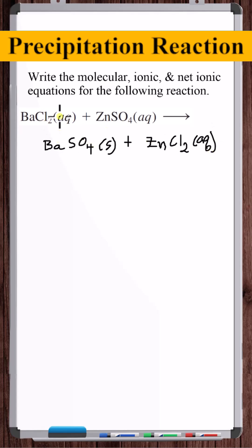Now we need to balance this. It's already balanced. That's the molecular equation. The ionic equation: if a compound is aqueous, we dissociate it into ions. If it's not aqueous, we leave it as a compound.